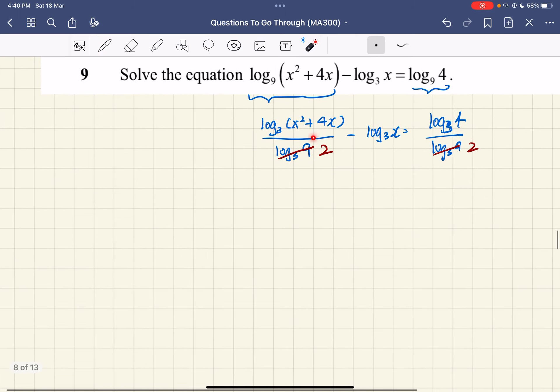Multiply throughout by 2, you have log base 3 of x squared plus 4x subtract 2 log base 3 of x equals log base 3 of 4.